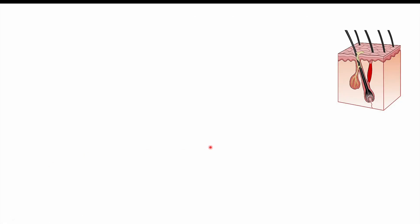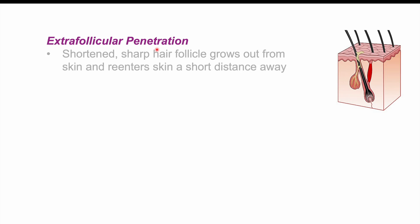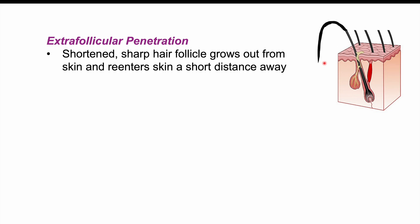Now let's discuss some of the pathophysiology behind why this condition occurs. There are two different ways this can occur. First is through what we would call extrafollicular penetration. This is where a shortened, sharp hair follicle grows out from the skin and re-enters the skin a short distance away. If we've got a curly hair follicle that is cut too short, it can twist back in on itself and penetrate back into the skin, leading to inflammation — a little bump we call a shaving bump or pseudofolliculitis barbae.